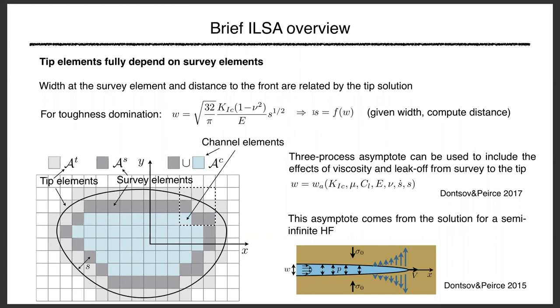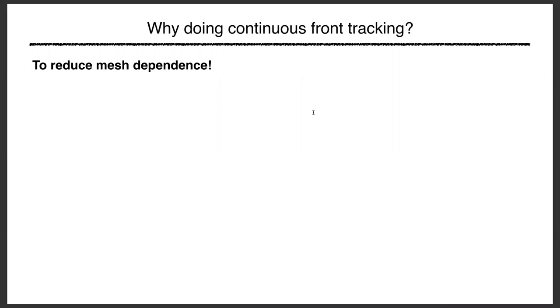Why bother with continuous tracking? The key answer is to reduce mesh dependence. In academia, you want an accurate answer for a given mesh. In industry, you want to use a coarser mesh while meeting your tolerance, so you run faster. That's a big advantage.